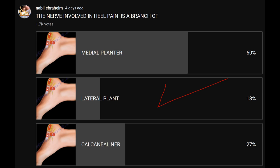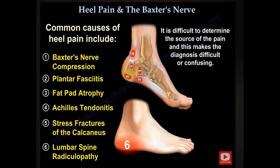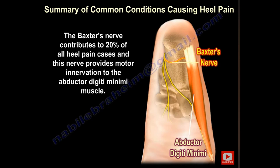The nerve involved in heel pain similar to plantar fasciitis is a branch of the lateral plantar nerve. The first branch of the lateral plantar nerve is called the Baxter nerve, and it is involved in chronic heel-related pain. Pain associated with the Baxter nerve is very similar to pain associated with plantar fasciitis. The Baxter nerve contributes to about 20% of heel pain cases, and provides motor innervation to the abductor digiti minimi muscle.